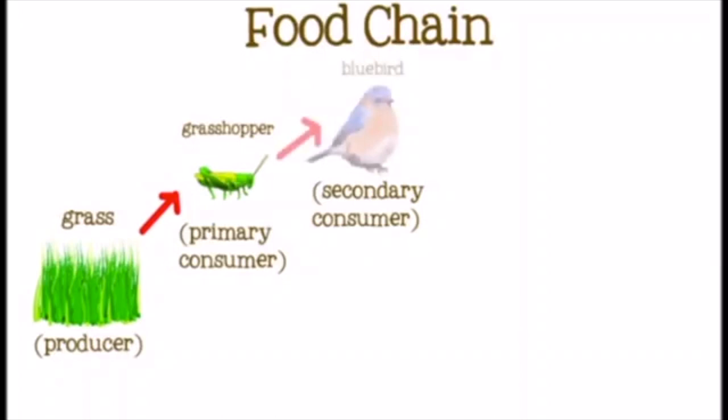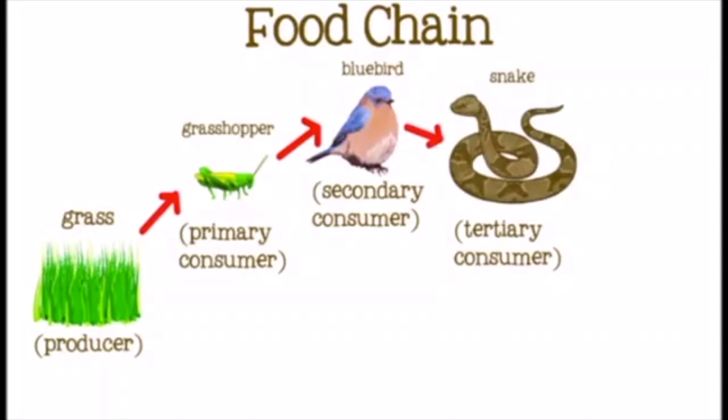Then the bird is eaten by a snake. The snake is called a carnivore, which means meat eater, and it's a third level consumer. Finally, we have the owl, and it is a plant and meat eater animal.